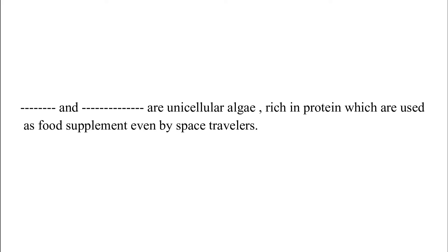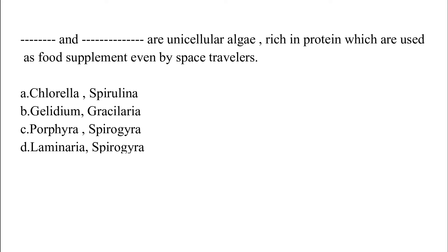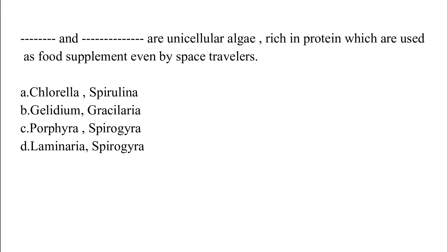Dash and Dash are unicellular algae, rich in protein, which are used as food supplement even by space travellers. Option A: Chlorella, Spirulina. Option B: Gelidium, Gracilaria. Option C: Porphyra, Spirogyra. Option D: Laminaria, Spirogyra. The correct answer is Option A, which is Chlorella and Spirulina.